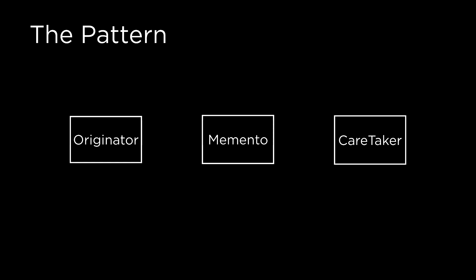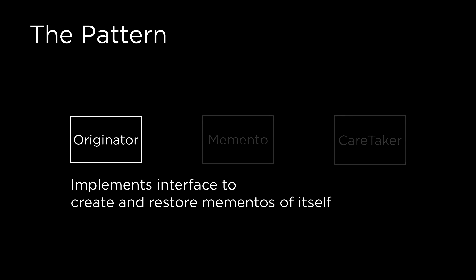First of all, the terms — and these are the original terms. The originator is the component. This is where the origin state is. We need to implement an interface to create and restore a memento for itself. So if you want a component to support an undo feature, it needs to implement some kind of an interface. It needs to know how to restore a state and how to save a state.